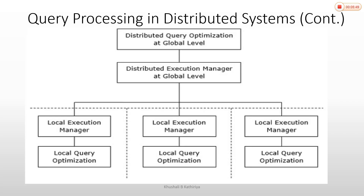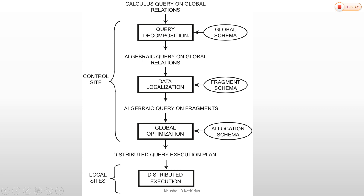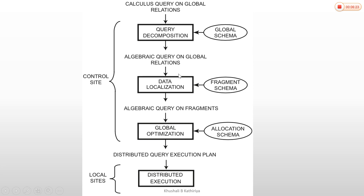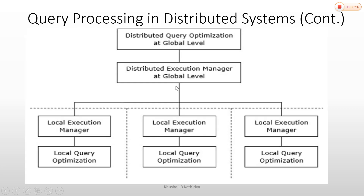The control site is the client site where the query enters. If there are no errors — no syntax or grammatical mistakes — then global optimization occurs, followed by local site execution. Each local site executes its portion and the results are combined at the distributed global environment.